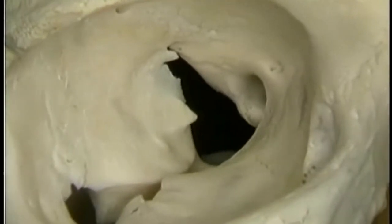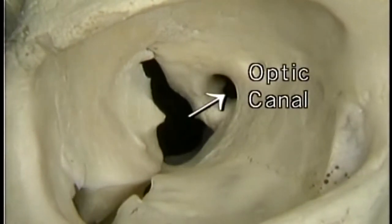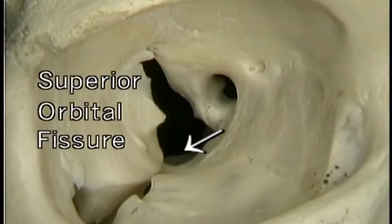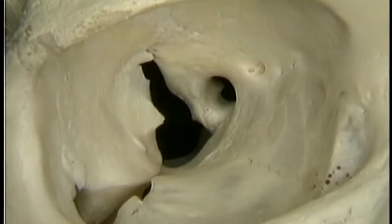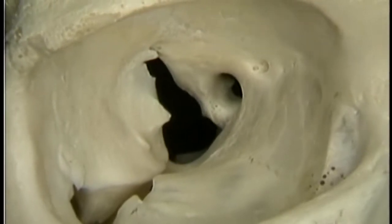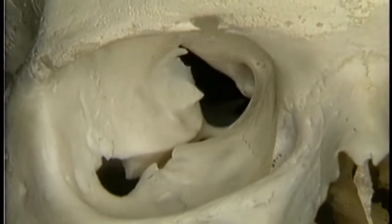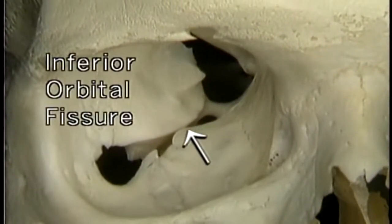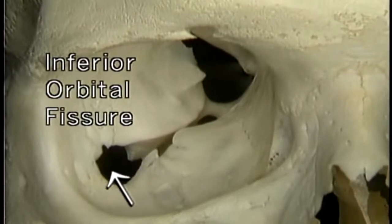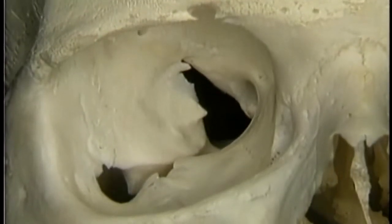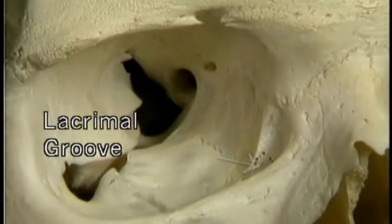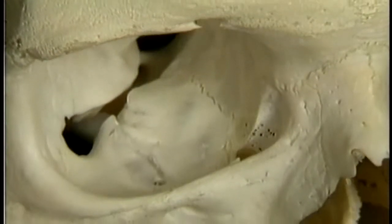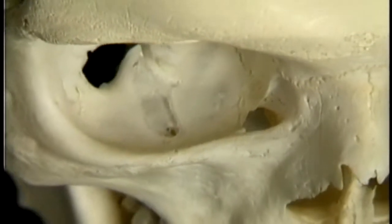Here at the narrow apex of the orbit are the optic canal and the superior orbital fissure. The optic canal transmits the optic nerve and ophthalmic artery. The superior orbital fissure transmits the other nerves that enter the orbit and the superior orbital vein. In the living body, the inferior orbital fissure, which forms an apparent gap between the floor and the lateral wall, is bridged over with fibrous tissue. This groove, the lacrimal groove, leads downwards into the opening for the nasolacrimal duct, which takes tears to the nasal cavity.